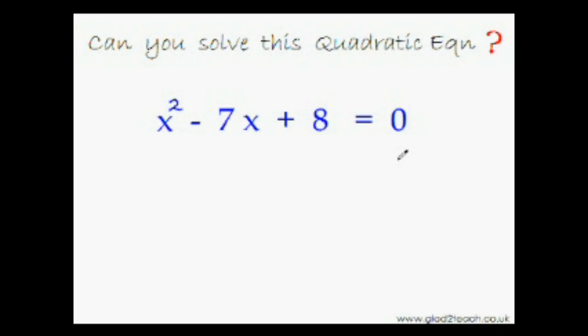At first glance you think that the two factors of 8 whose sum or difference is 7 would be 8 and 1. Isn't it? Difference of 8 and 1 is 7. But try adjusting the signs and you will know that something is wrong.